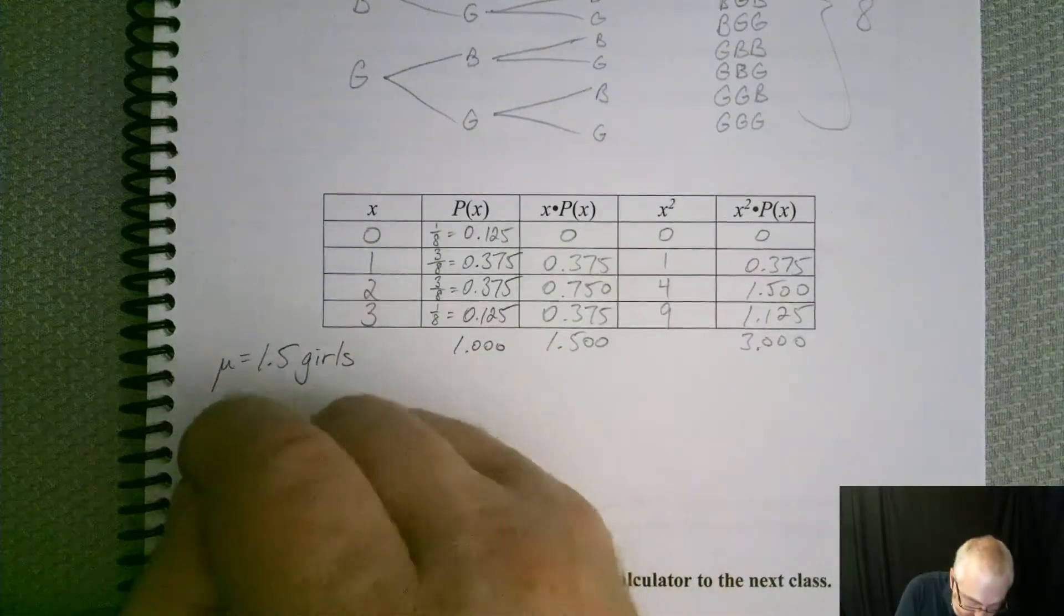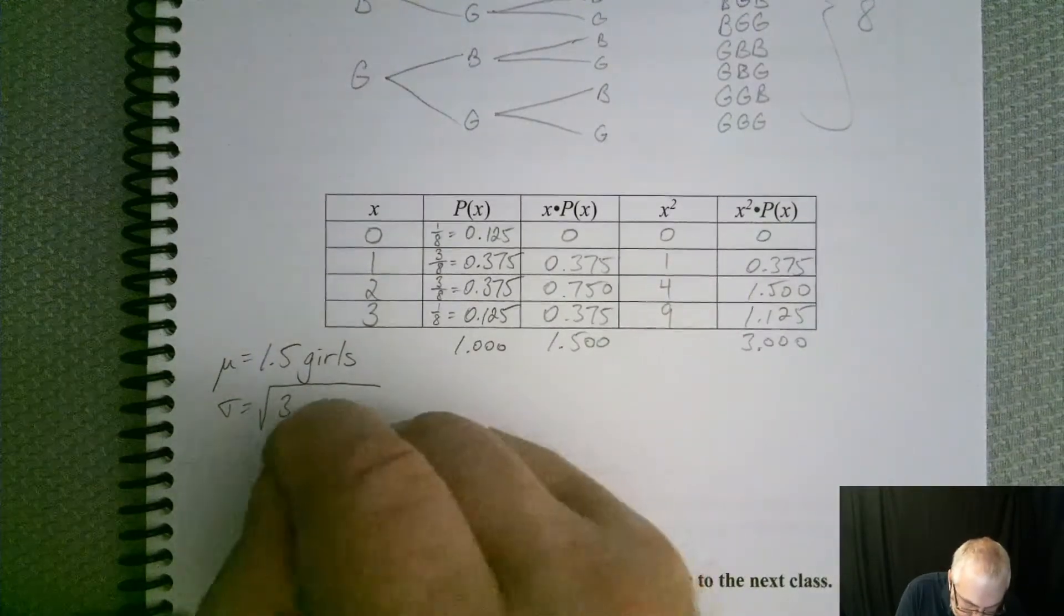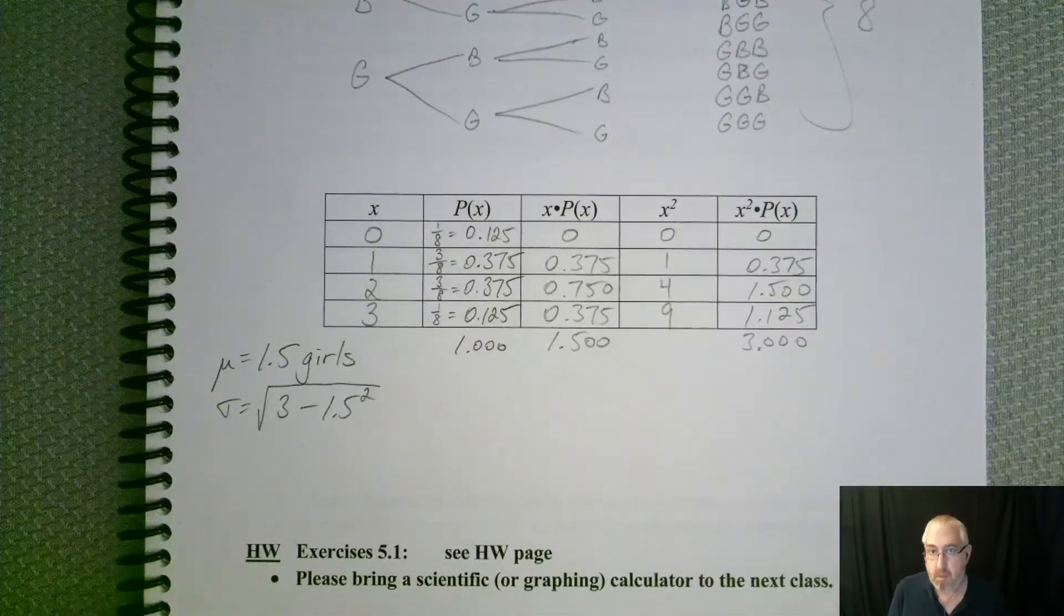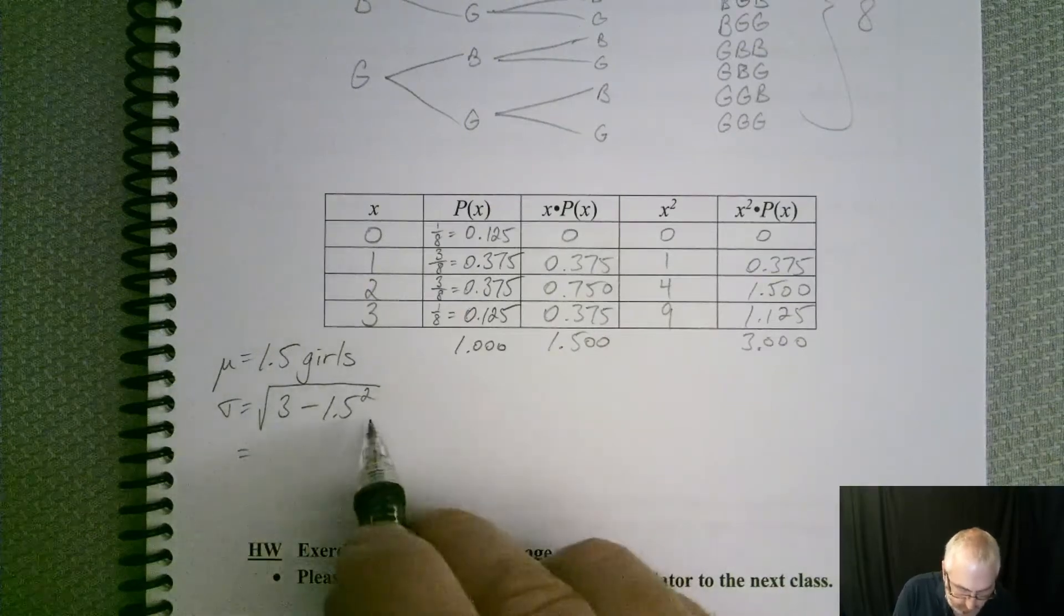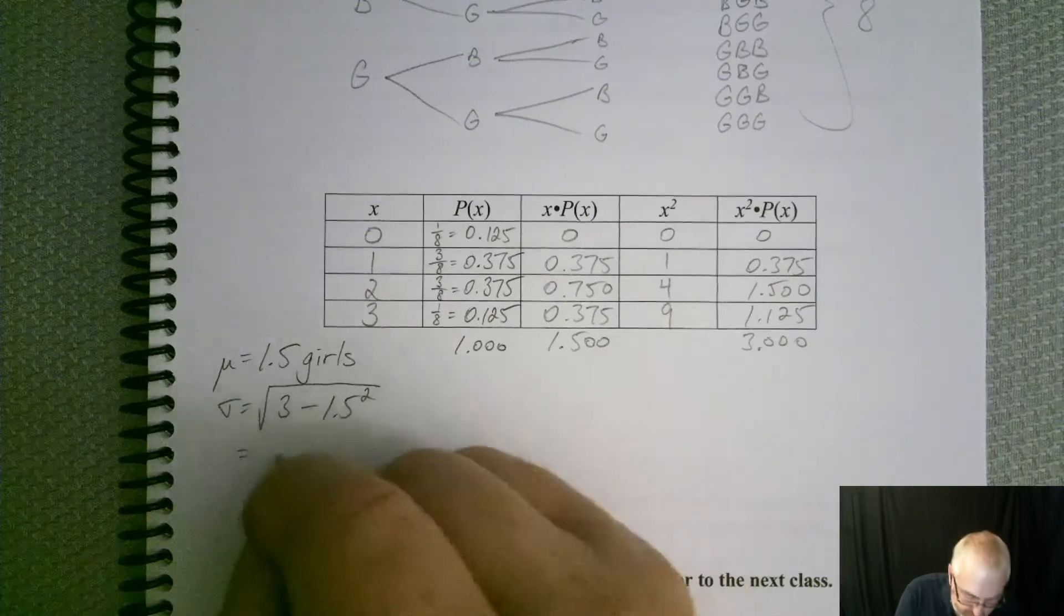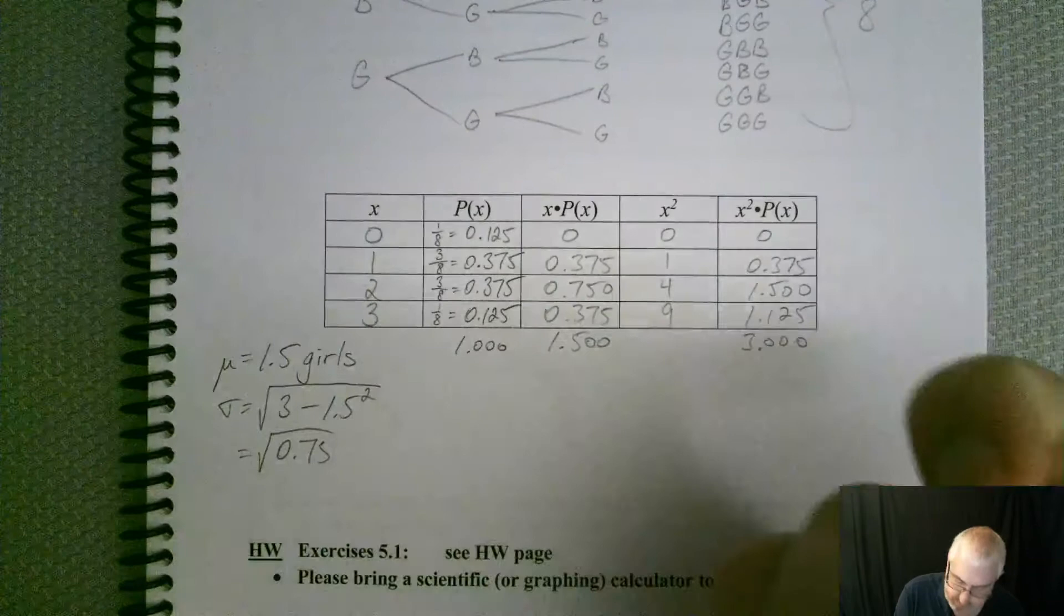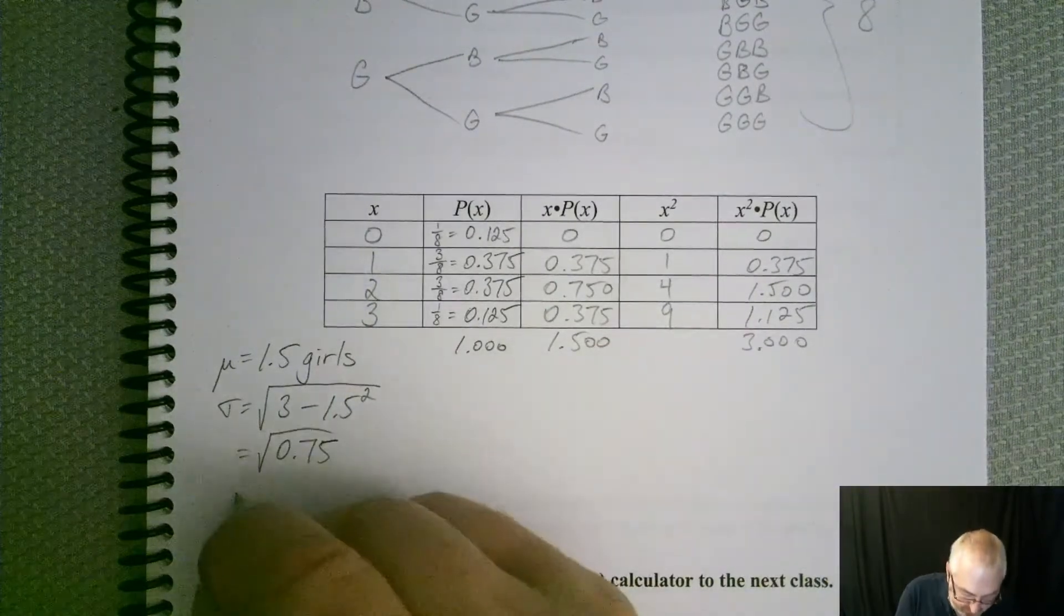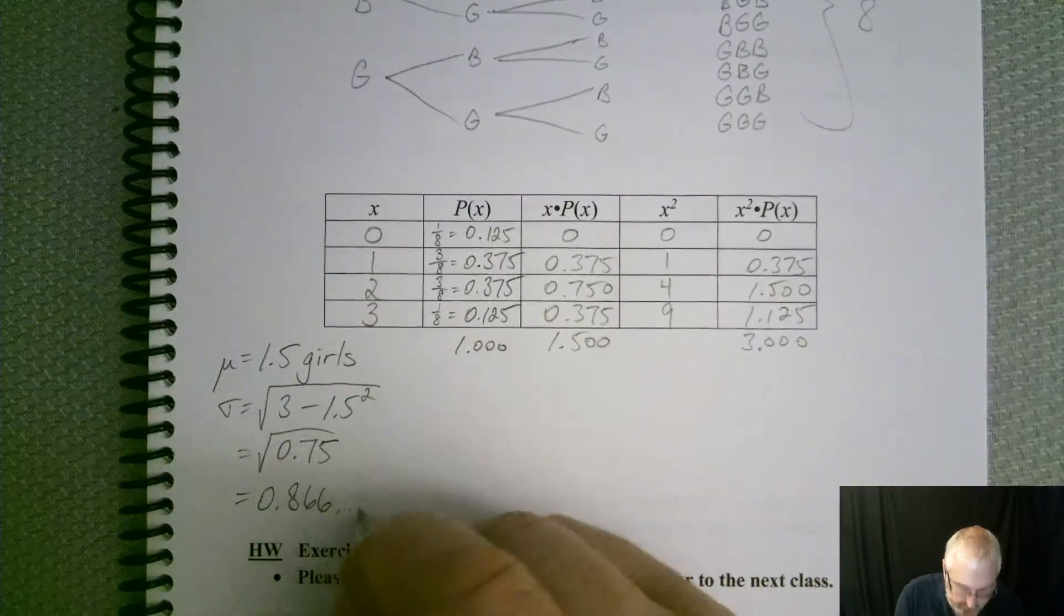And then our standard deviation. So the square root, 3 minus 1.5 squared. All right, so if we do that, well, 1.5 squared I believe is 2.25, 3 minus that would be the square root of 0.75. And the square root of that, 0.866 and so on.